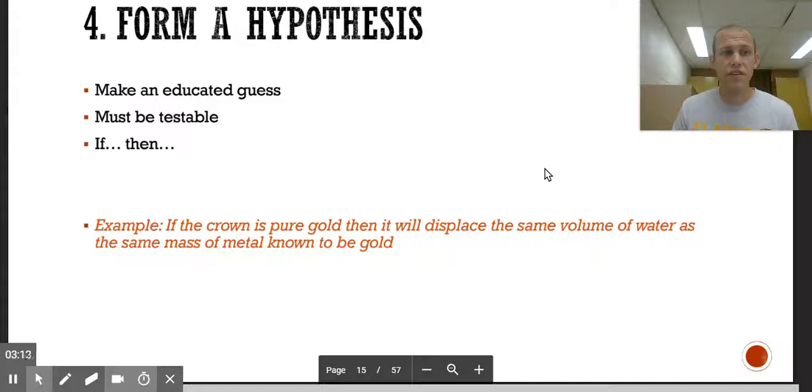Form a hypothesis, which is just an educated guess, what you think might happen. It must be testable, and it should be written as an if-this-then-that statement. For our example, if the crown is pure gold, then it will displace the same volume of water as the same mass of metal known to be gold. I take this much gold and I put it in water, and I do the same thing with the crown that has exactly the same amount of gold, and they should displace or move the same amount of water. If they don't, then the crown isn't really gold.